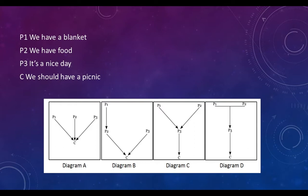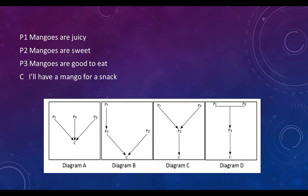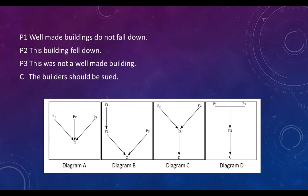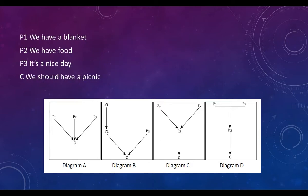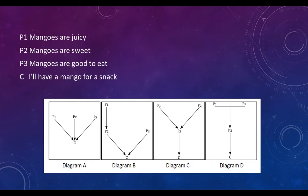So we have a blanket, we have food, it's a nice day, we should have a picnic. A is what I was aiming at. Those are all independent reasons why it might be a good idea to have a picnic. And none of them are necessary, but each of them is relevant independently. Partly premise three is an idiom, so it's not just a literal description. It's more like it's a nice day out is implied I think.